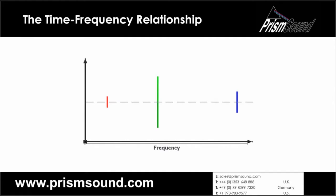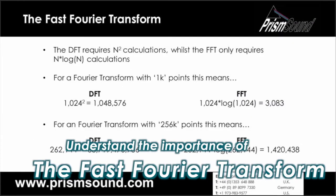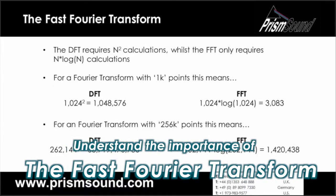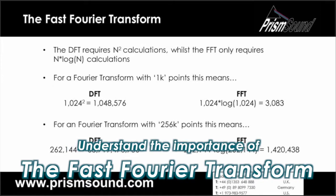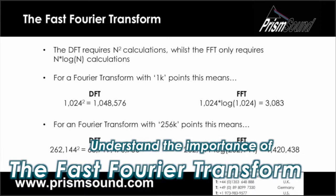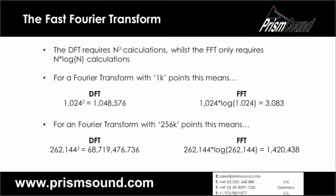With 250,000 FFT points, the DFT is taking just under 69 billion calculations, whereas the FFT takes about 1.4 million calculations. So you can see there's a pretty big difference in the amount of time.